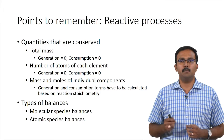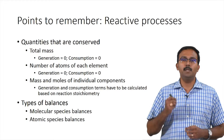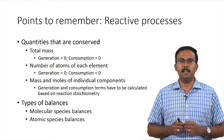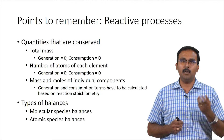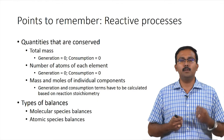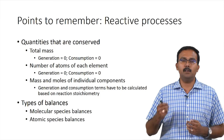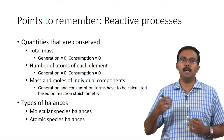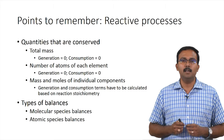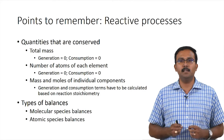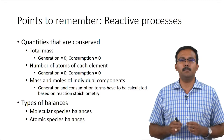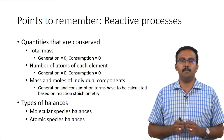An important point about atomic species balances is that we write them for each atom. For example, one molecule of methane contains one atom of carbon and four atoms of hydrogen. So if one mole of methane enters the reaction, you account for four moles of hydrogen atoms entering. The hydrogen balance for this example would be four times the number of moles of methane entering. Similar principles apply for all components taking part in the reaction.